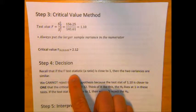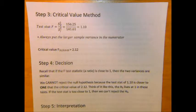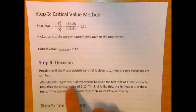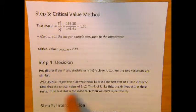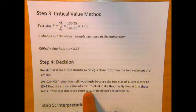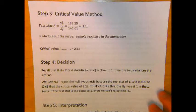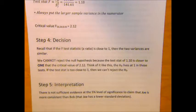If the F statistic is close to 1, then the variances are very similar. In this case, we cannot reject the null hypothesis because the test statistic of 1.1 is closer to 1 than the critical value of 2.12. Think of it like this: The null hypothesis lives at 1 in these tests. We're trying to reject the null hypothesis, so we want the test statistic to be far from 1. Your interpretation is that there is not sufficient evidence at the 5% level of significance to claim that Joe is more consistent than Bob. This may be a result of randomness and small sample sizes.